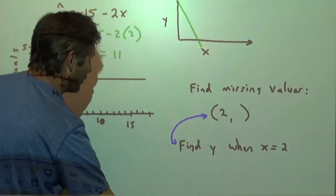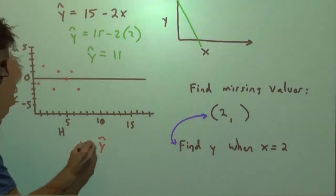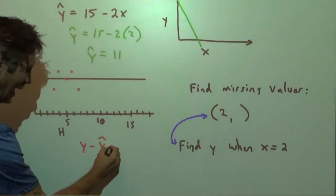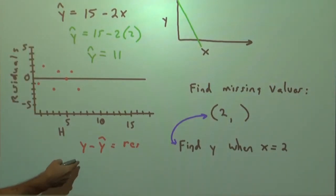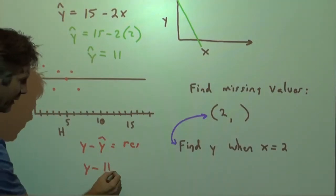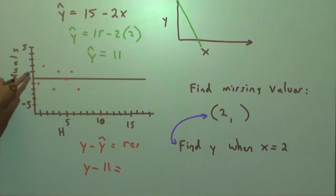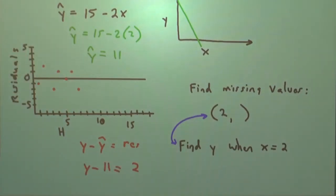But if we're a formula person, we can say, okay, no problem. The residual is always Y minus Y-hat. That equals the residual. So let's plug in what we know. We don't know the Y, so that's the unknown. Minus, we can figure out the Y-hat from the formula. That's 11. And we know the residual is 2. We get that from the residual plot. So we can solve that algebraically and also arrive at the notion that the observed Y must have been 13.